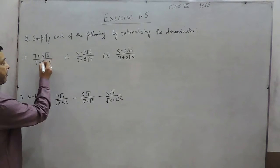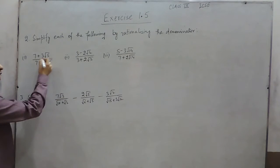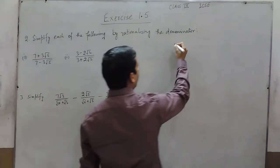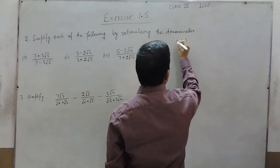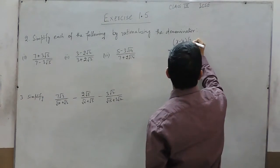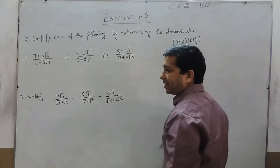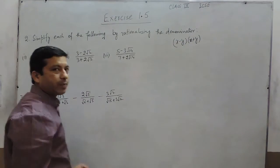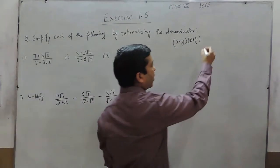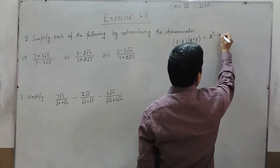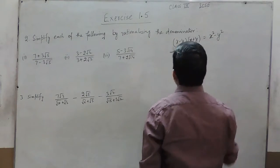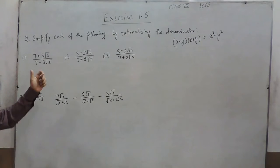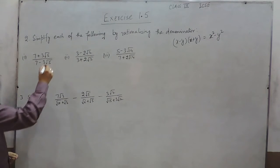To rationalize the denominator, as I told you in the first question, x minus y has to be multiplied by x plus y, or if it is x plus y, it has to be multiplied by x minus y. This is because squaring an irrational number will make it a rational number.